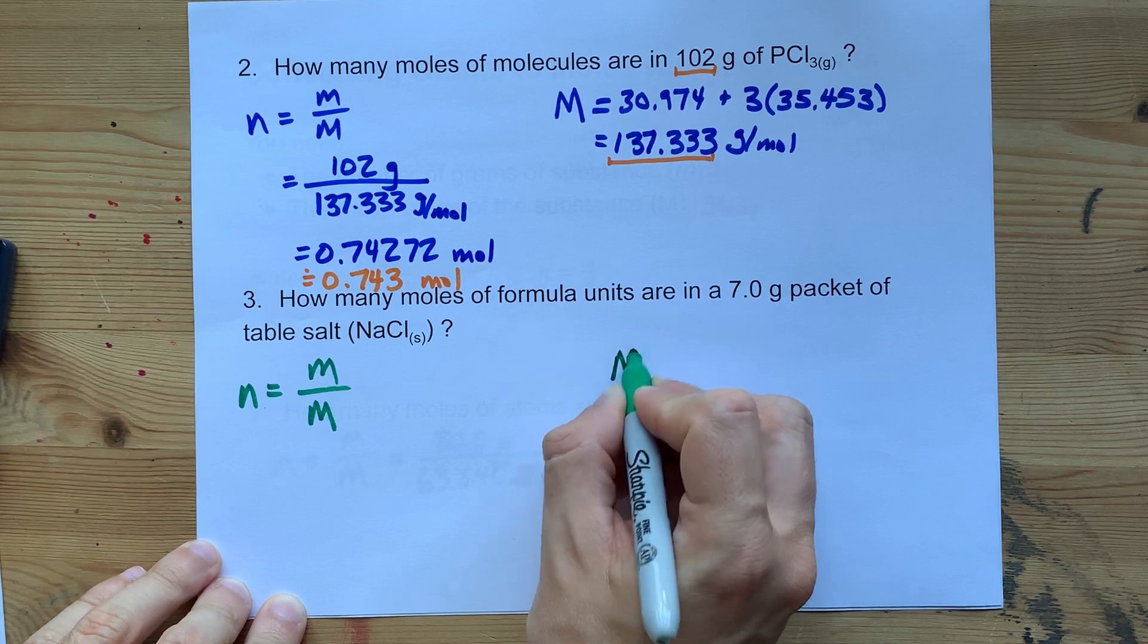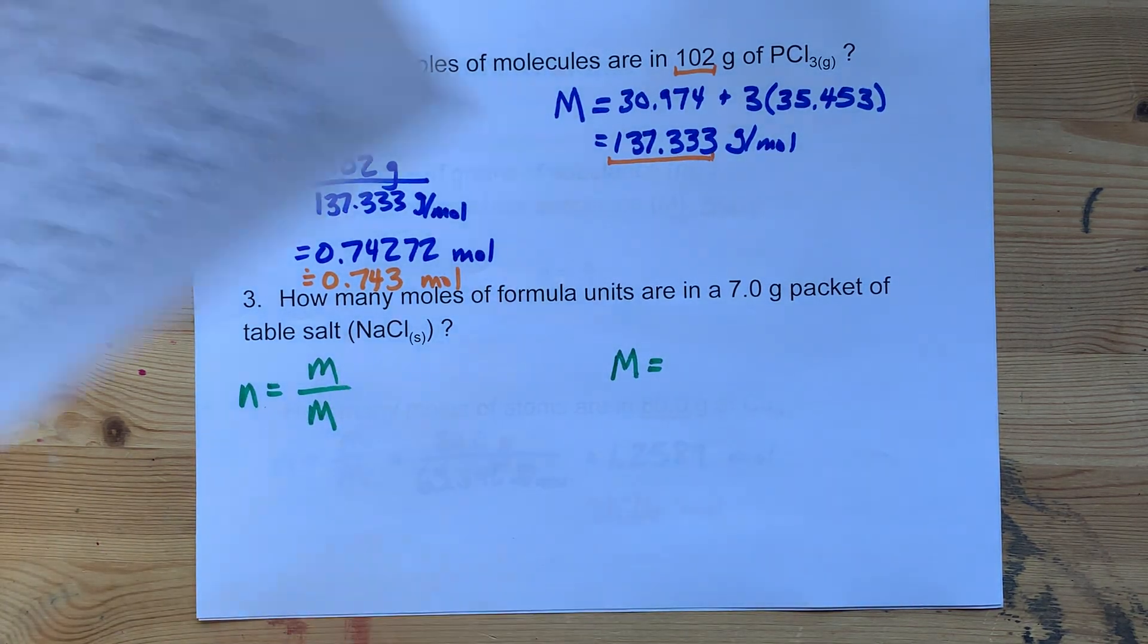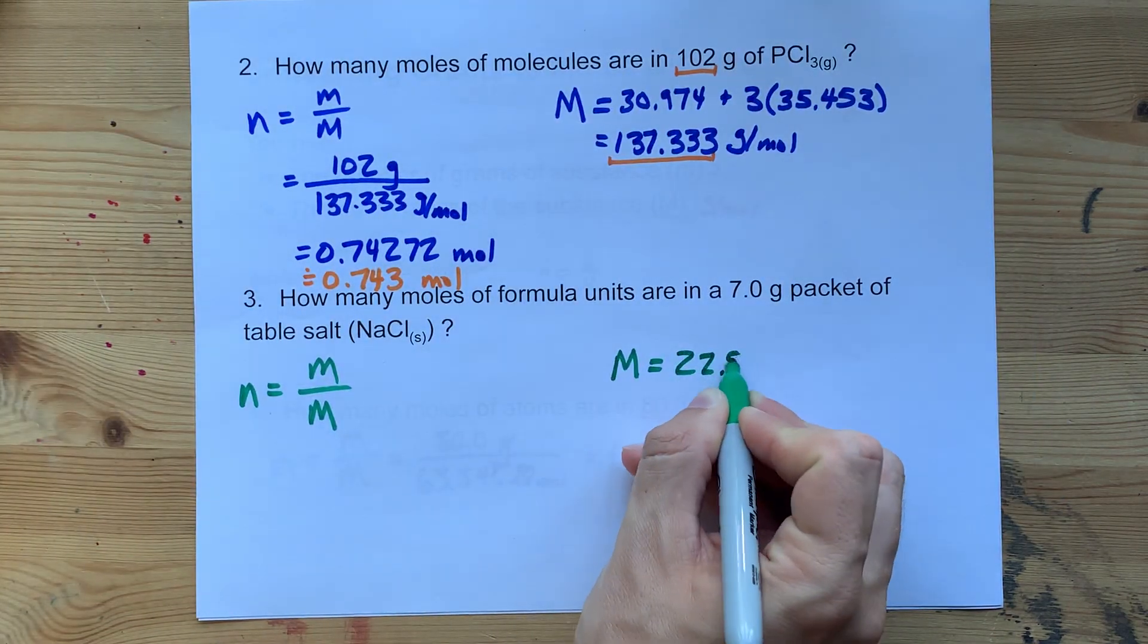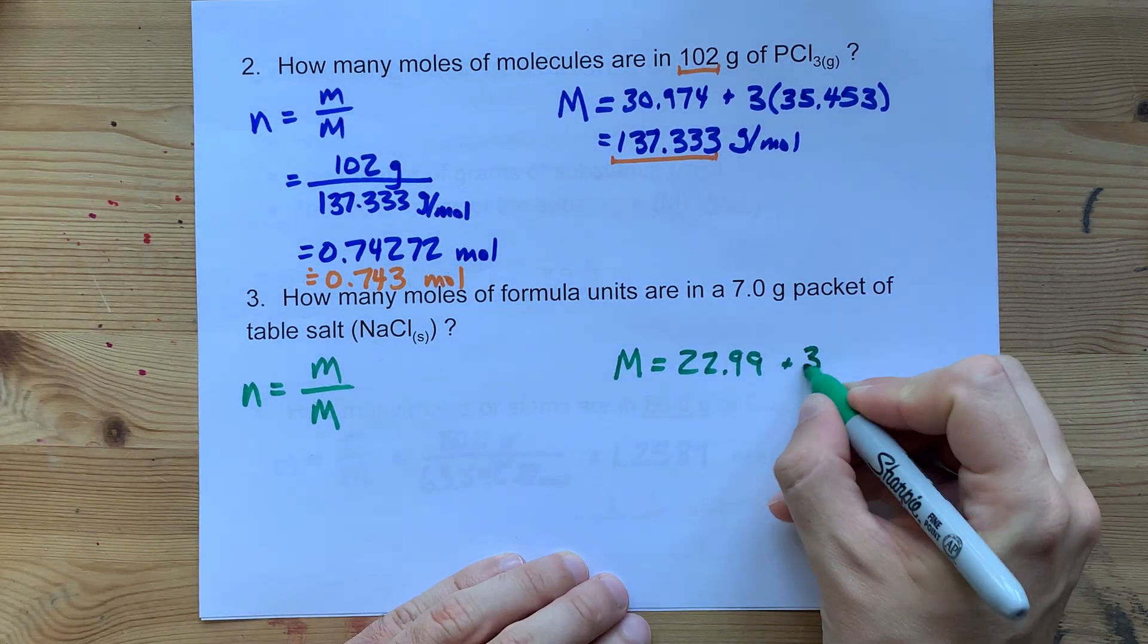I already know I'm going to need to calculate the molar mass because it's a sodium, 22.99, and a chlorine, 35.453.